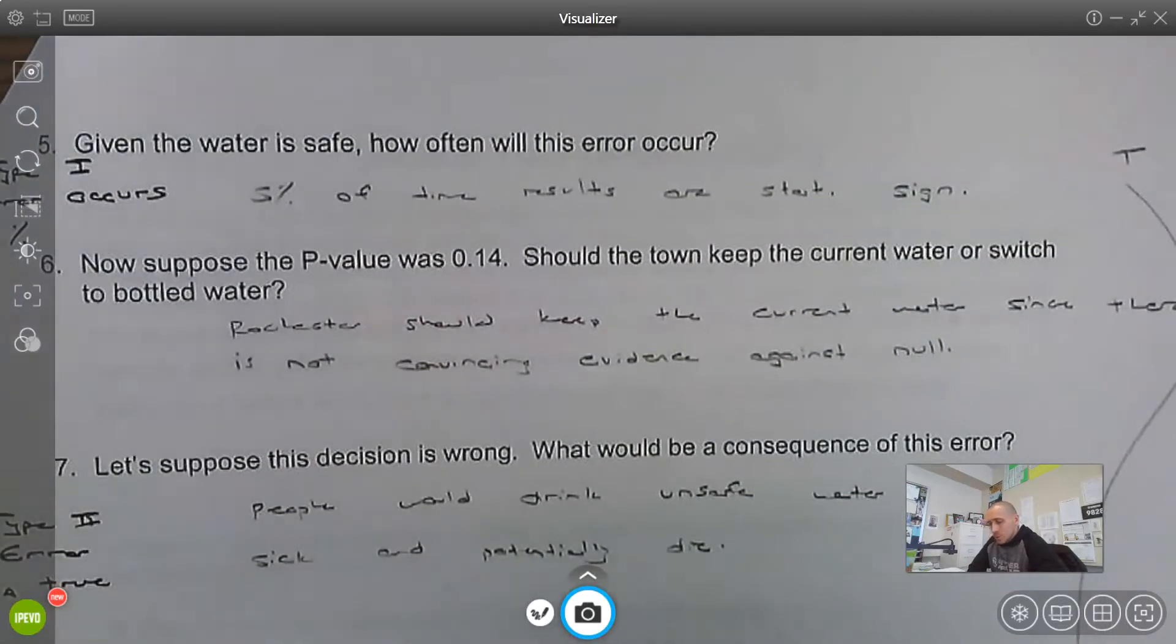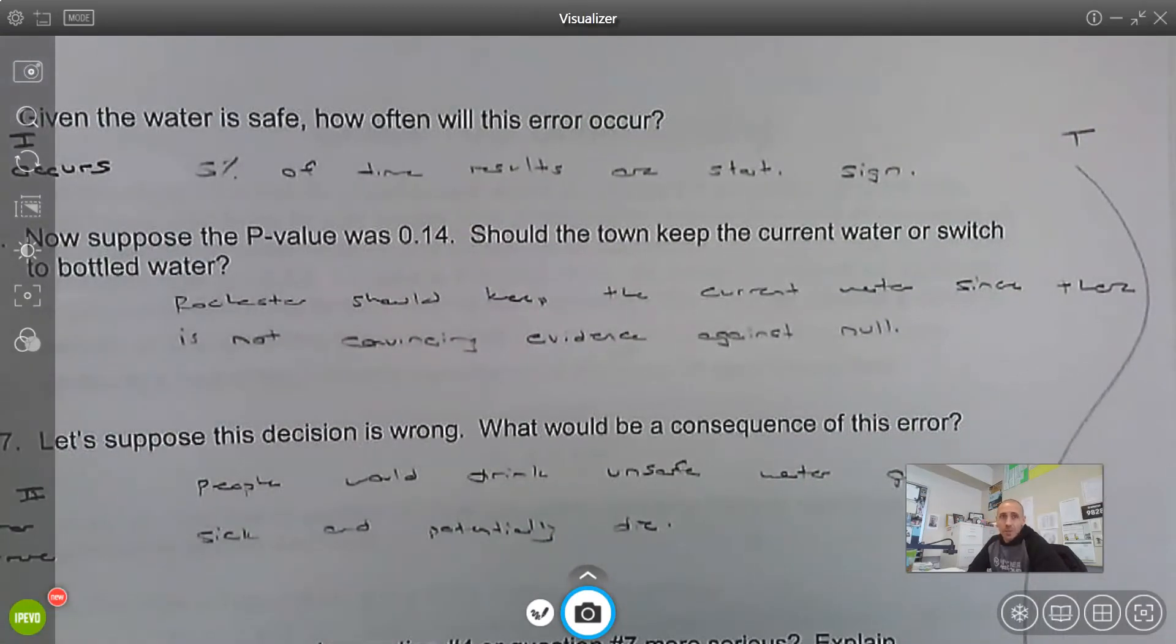Now suppose the p-value is 0.14. Should the town keep the current water or switch? Well, now we should do the opposite. We should keep the current water because we don't have convincing evidence that the level is over that 70 parts per trillion.